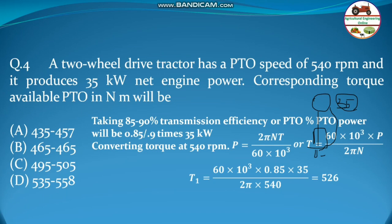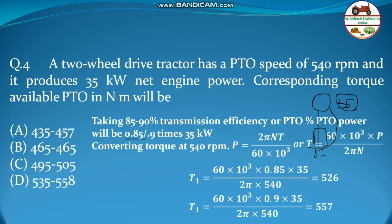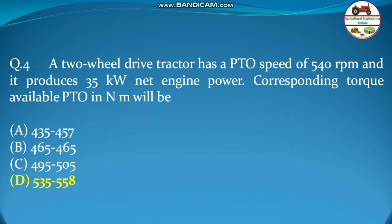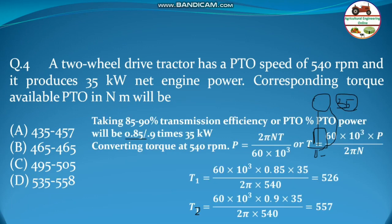Taking transmission efficiency of 85%, torque T₁ = 526 N·m. Taking efficiency of 90%, torque T₂ = 557 N·m. Therefore the answer is the range 535 to 558, since 526 to 557 is nearest to that option.